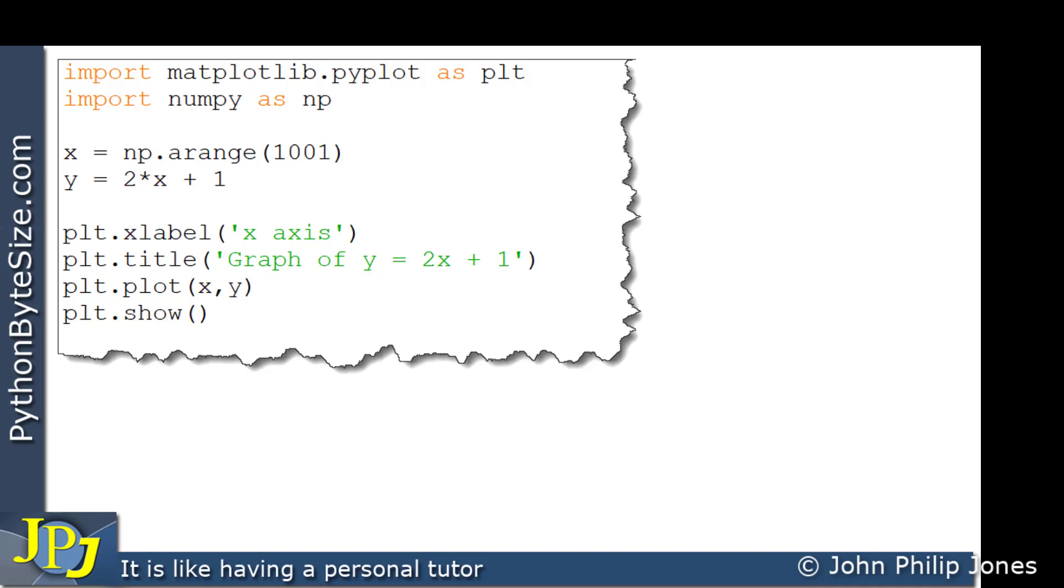The difference being I've added this additional program statement here, and you can see I'm using plt, and I'm going to be invoking this, and to this I'll be passing this string x-axis, and this will be used to label the x-axis of the graph that's going to be plotted.